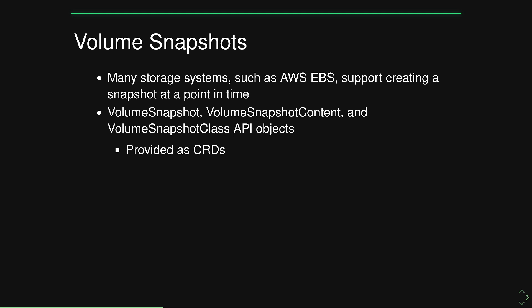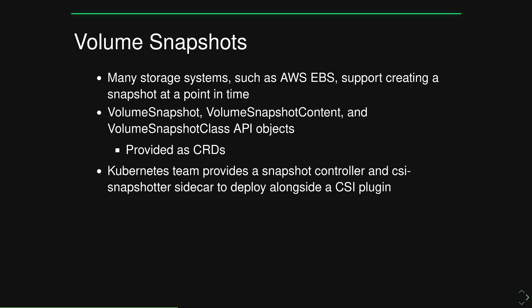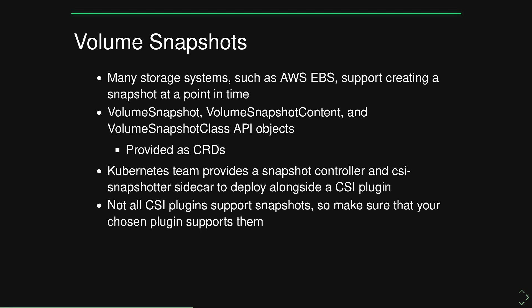These CRDs are not part of the core API, so they need to be enabled by some kind of add-on like a Container Storage Interface that supports snapshots. The API objects are VolumeSnapshot, VolumeSnapshotContent, and VolumeSnapshotClass. The Kubernetes team provides a snapshot controller and a snapshot sidecar that can be deployed alongside your CSI plugin to enable management of these snapshots. Not all CSI plugins support snapshots, so make sure your CSI plugin and drivers support that.